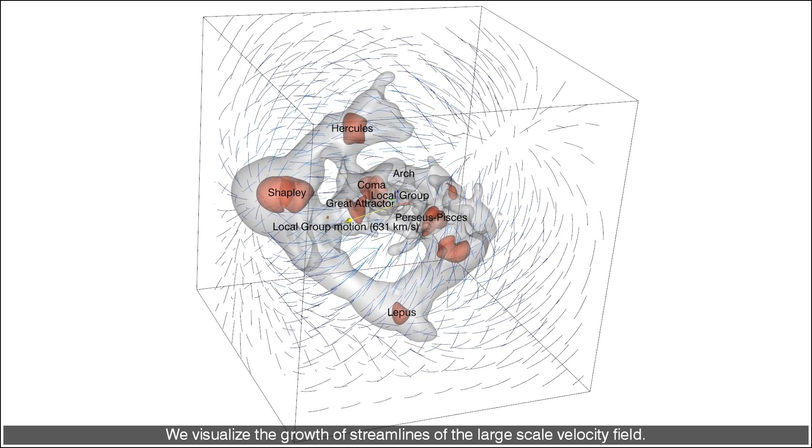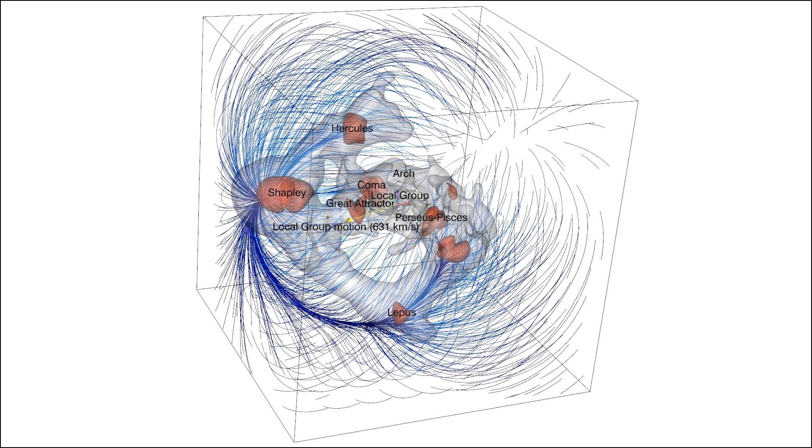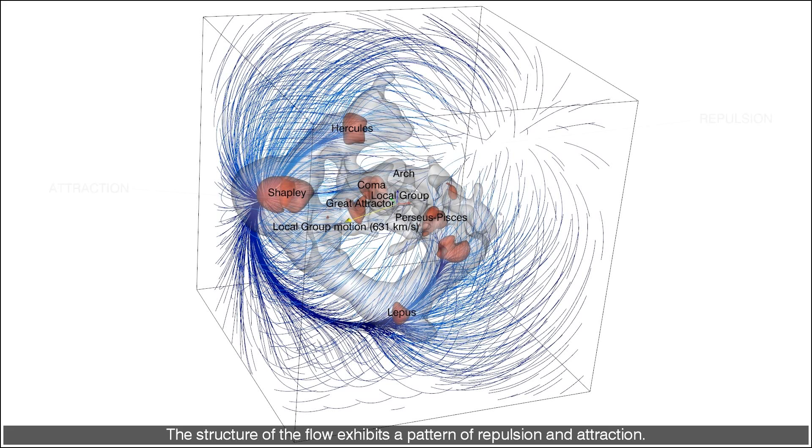We've visualized the growth of streamlines of the large scale velocity field. The structure of the flow exhibits a pattern of repulsion and attraction. Mass elements travel a typical distance of roughly 1000 km per second along flow lines.